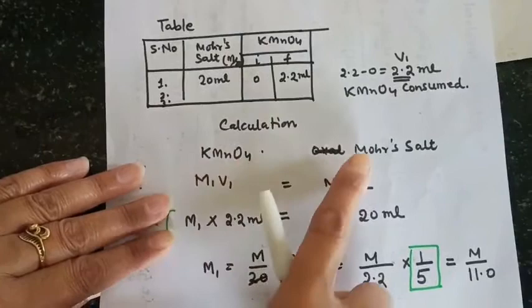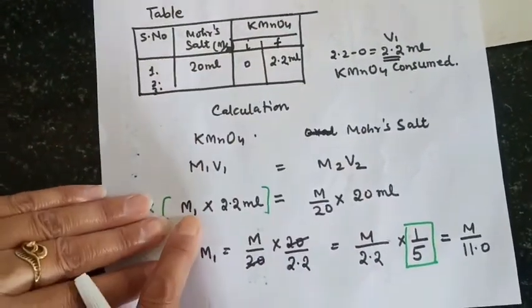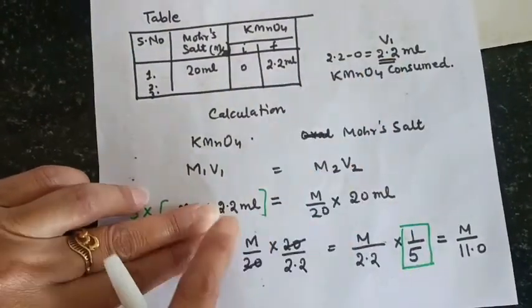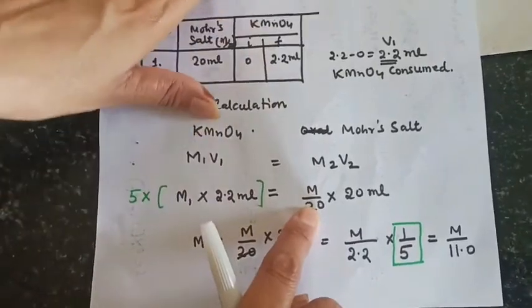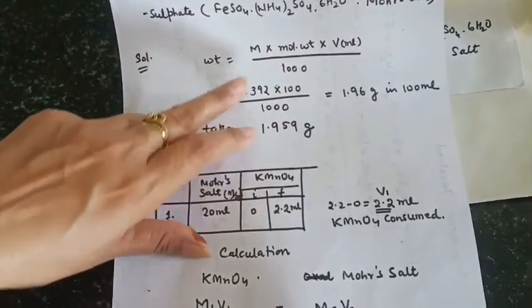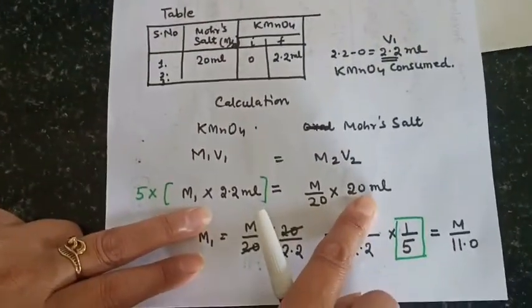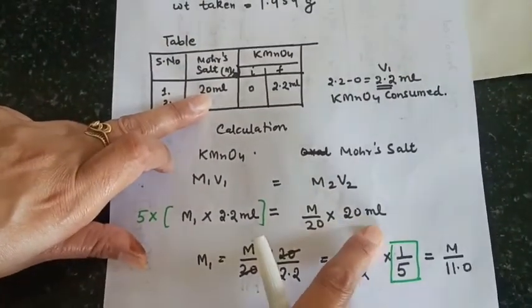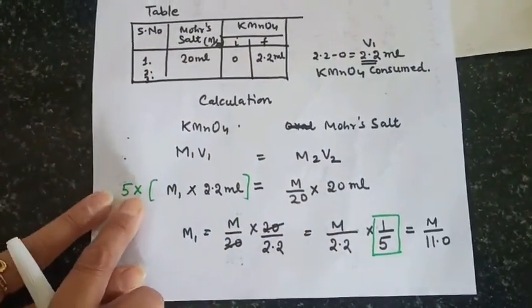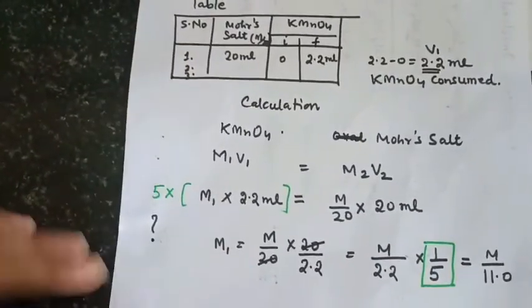Now the calculation. By the normality equation for chemical equivalence: a1M1V1 equals a2M2V2. For KMnO4, 2.2 ml is consumed. For ferrous ammonium sulphate it is M by 20, and 20 ml is taken. Now we are going to multiply by 5. And why is it so? For this we have to see the reactions which are involved in this titration. It is written in two different forms: molecular equation and ionic equation. I will explain it in my slide.